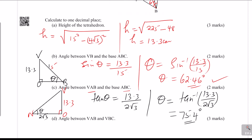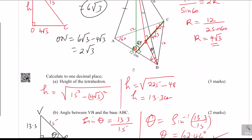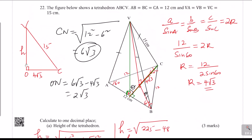The last question: the angle between planes VAB and VBC. Looking at the diagram, the required angle is the angle at vertex B in the base triangle ABC — the angle ABC. Because the base is equilateral, this angle is 60°.